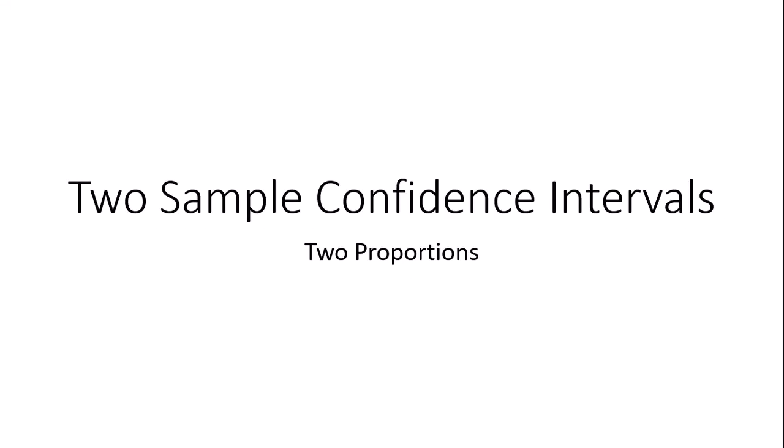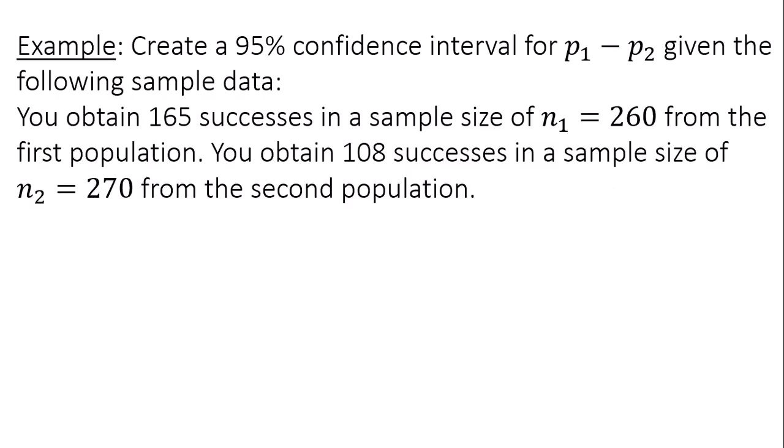Hello, this is a video on building two sample confidence intervals for two proportions. Create a 95% confidence interval for P1 minus P2 given the following sample data.